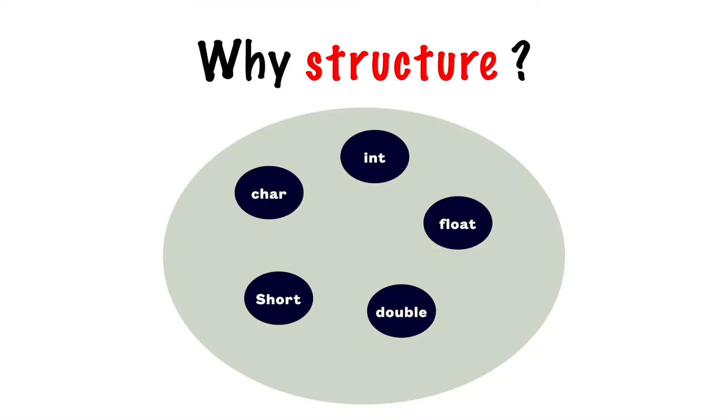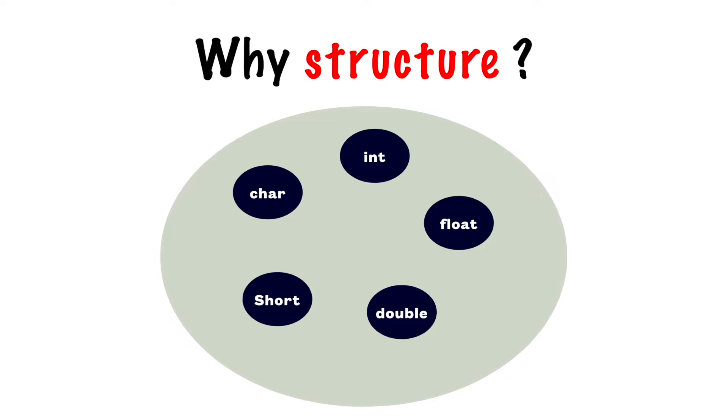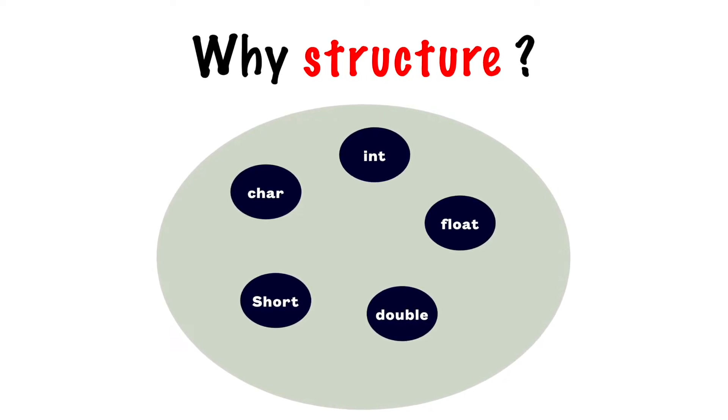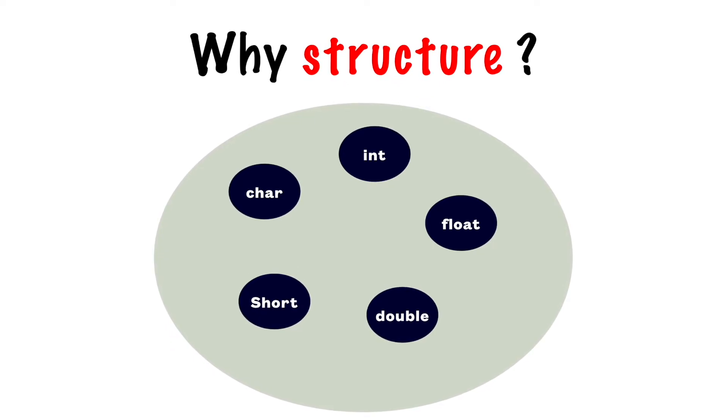Next question we can have, why do we need structure while we are having array? The answer is very simple. Memory can be allocated for same data type with array, but with the help of structure, we can have memory allocation for different data type as well.